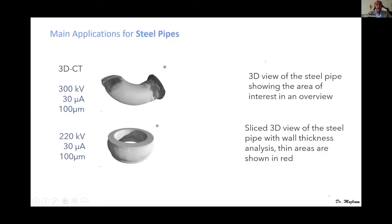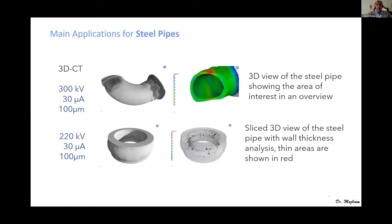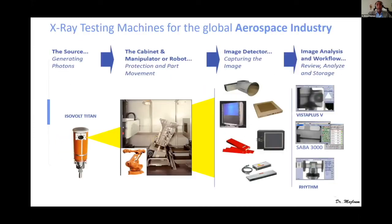For steel pipes, using CT machines we get valuable 3D screens with different colors that give very good images. You can easily inspect your product. In the aerospace industry — and I know many in today's audience are very interested in aerospace — this technology offers great opportunity.